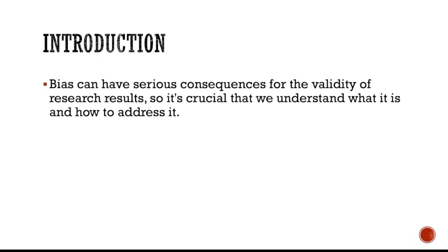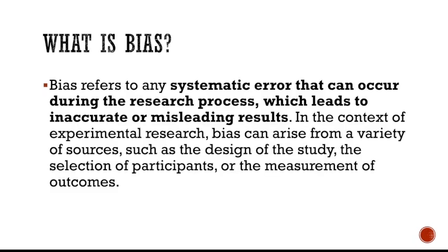It is crucial that we understand how to handle and control bias. I keep mentioning in our class that we have to control bias. Right now we're going to identify those kinds of biases. Many of you have already experienced research, so you're familiar with biases. Here I'll be more specific about the most common biases in experimental research. Bias is a systematic error that can occur during the research process, leading to inaccurate and misleading results. It can arise from the research design, the selection of participants, and your measurement.